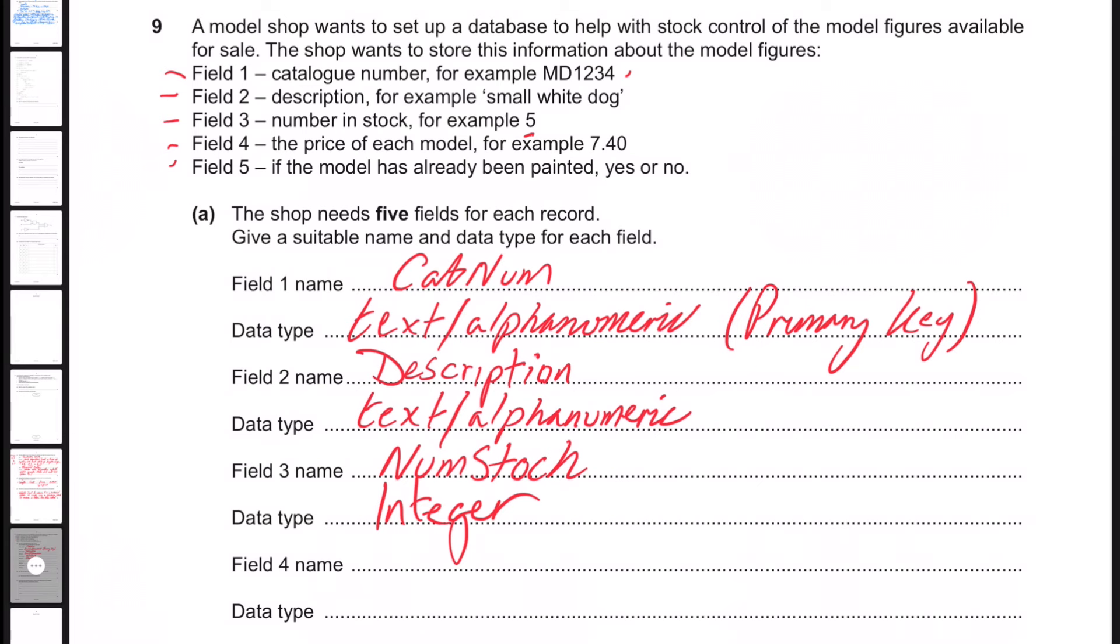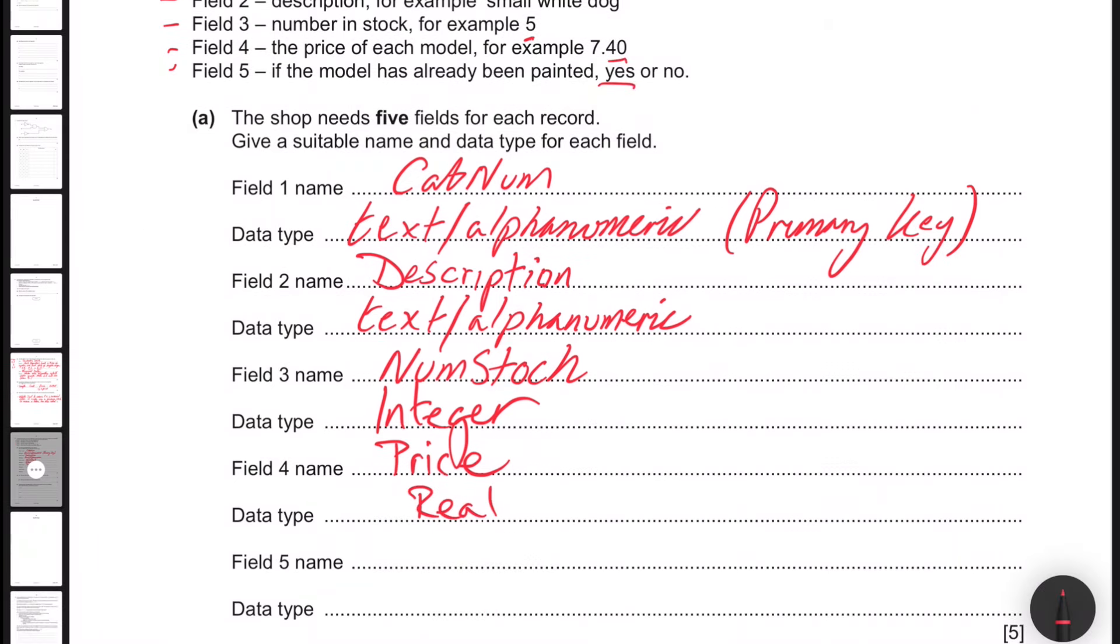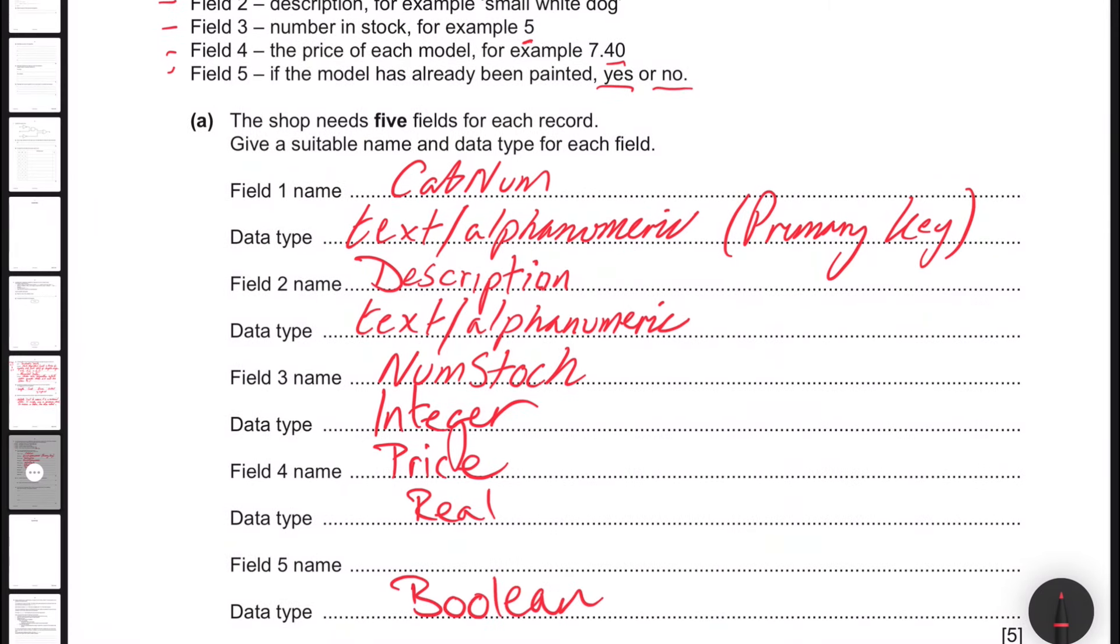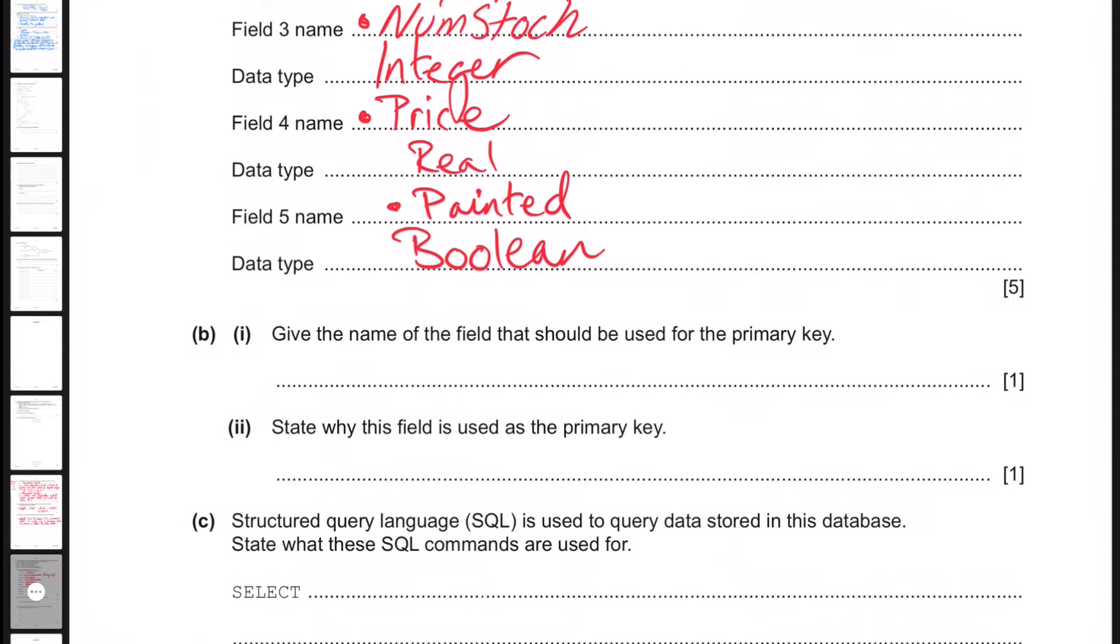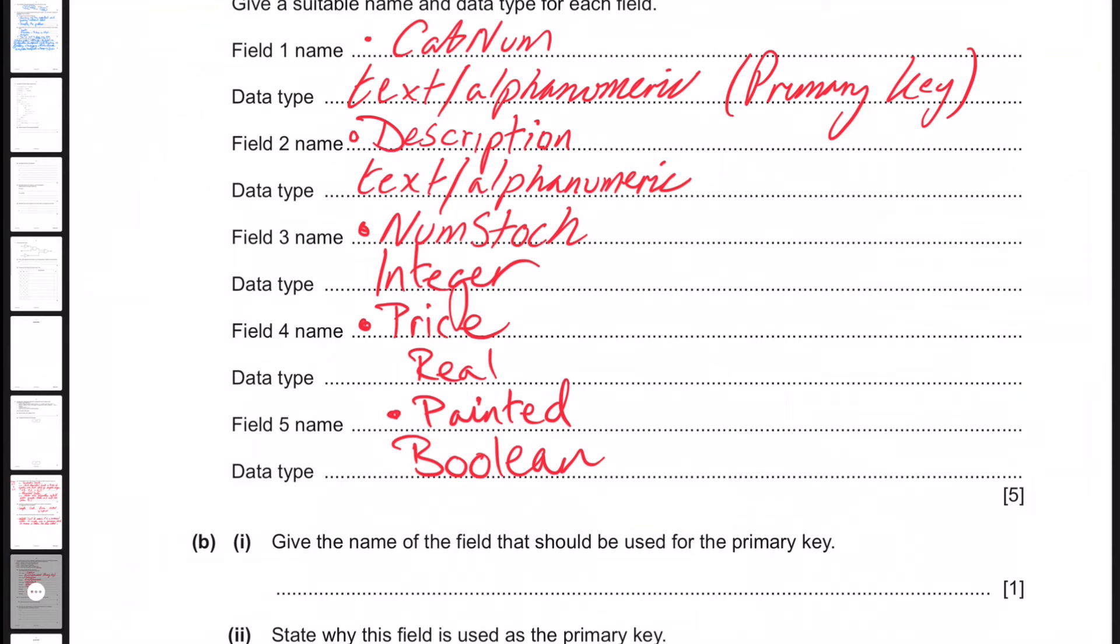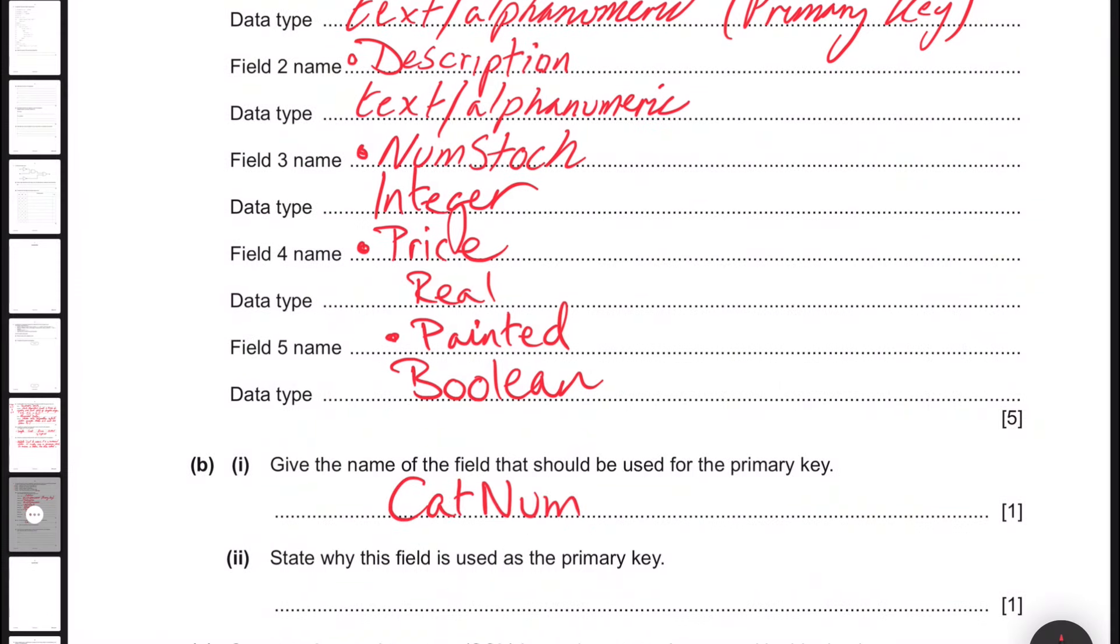Give the name of the field that should be used as a primary key. However, we've already done it. I'm going to put in there catnum. State why this field is used as a primary key. It is unique. Unique identifier.